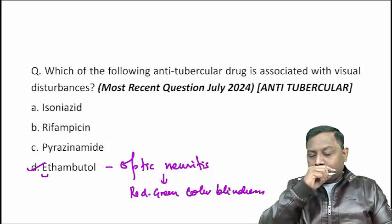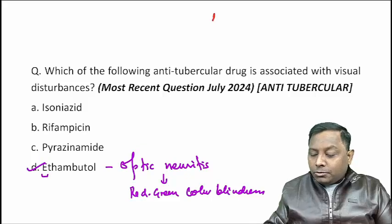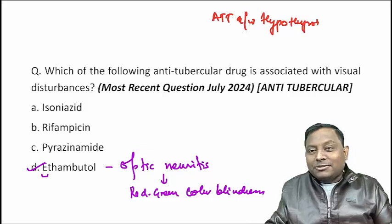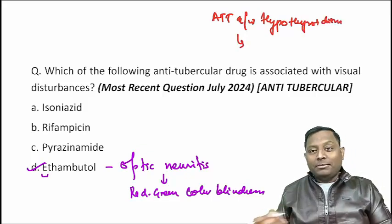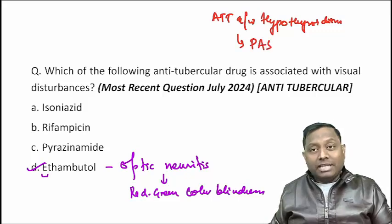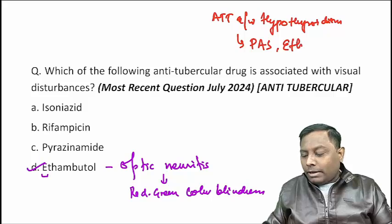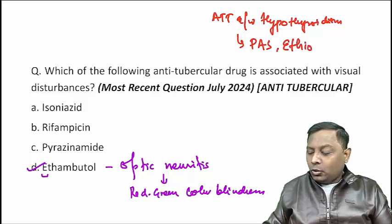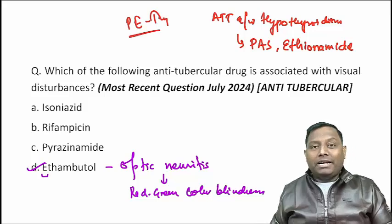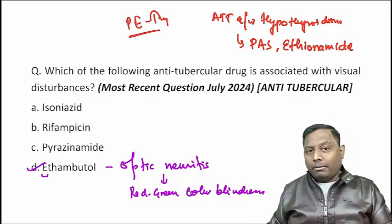Remember, in upcoming examinations they can also ask which anti-tubercular drug is associated with hypothyroidism. This question has appeared in FMG and can appear in your exam too. The drugs that cause thyroid problems are para-aminosalicylic acid (PAS) and ethionamide — both 'PET' drugs cause thyroid problems. Remember that.